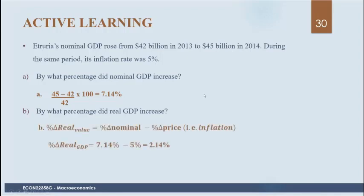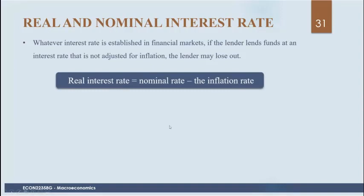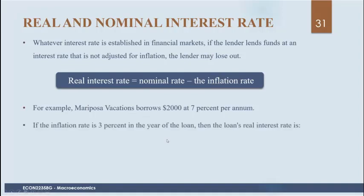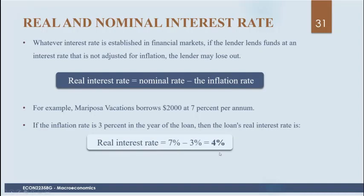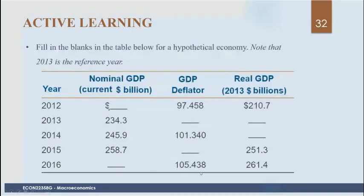We can also do that for the interest rate. Given the nominal interest rate and inflation, the real interest rate is just the difference. For example, if a company borrows $2,000 at 7% per annum and the inflation rate was 3%, the real interest rate on the loan would be 4%. The lender would be getting a real return of 4%, though they have to pay tax on the full nominal 7%.